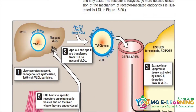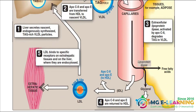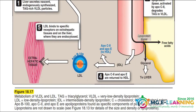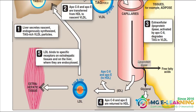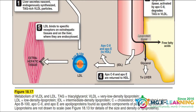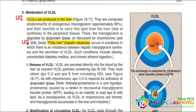Figure 18.17 covers the metabolism of VLDL and LDL. You should know where it ends and that there is also extra-hepatic tissue — that is muscle and liver. Metabolism of VLDL is again a UQ, and fatty liver or hepatic steatosis is also a UQ.